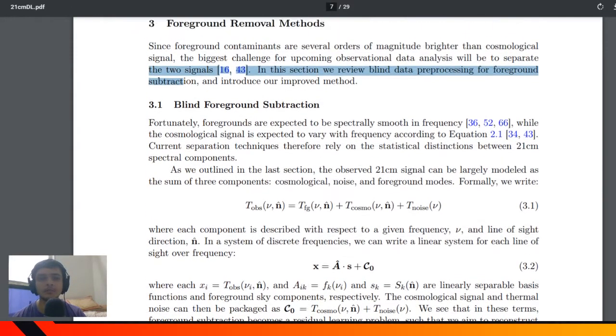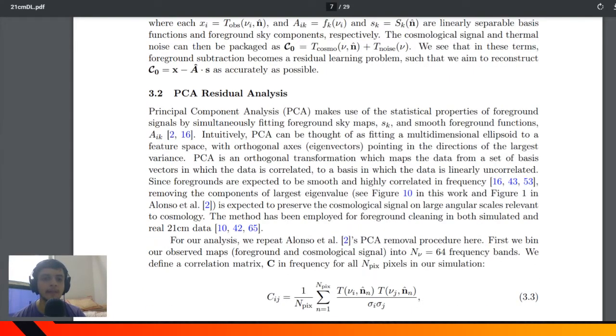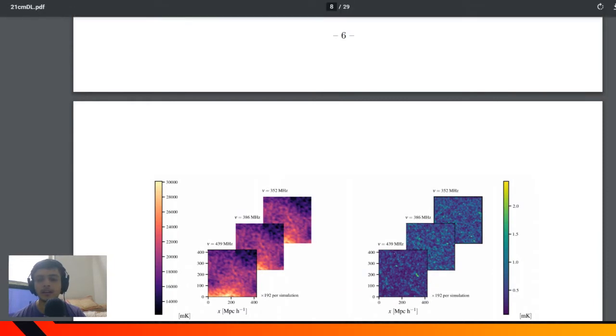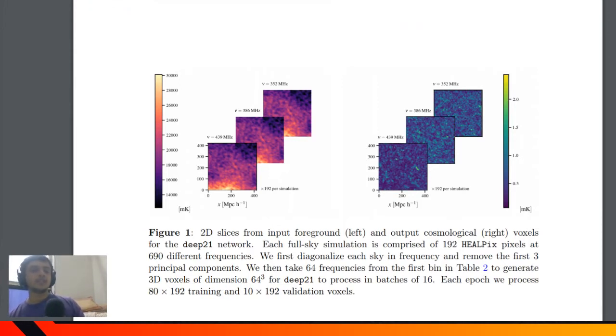As I said previously, people were using blind foreground subtraction for removing foreground noise. This is a 3D cube - out of that you take a 2D slice. Each voxel you can see here at different frequencies, this is multi-frequency power spectra. At different frequencies you see what residuals you have from the simulation of such cosmological red-shifted data.